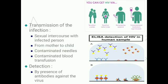Transmission of the infection occurs through sexual intercourse with an infected person, from mother to child, contaminated needles, and contaminated blood. Detection of the virus is done by the ELISA test through the presence of antibodies against the virus; presence of antibodies indicates presence of infection.